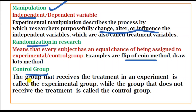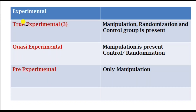The group that receives the treatment in an experiment is called the experimental group, while the group that does not receive the treatment is called the control group. For example, in the muscle relaxation exercise study, the group receiving the exercise is the experimental group, and the observed group is the control group. Types of experimental research are true experimental, quasi-experimental, and pre-experimental.